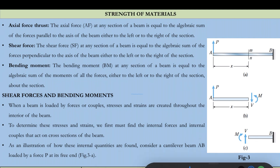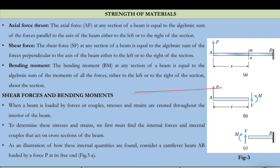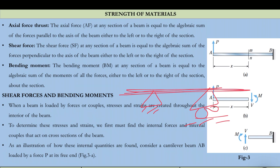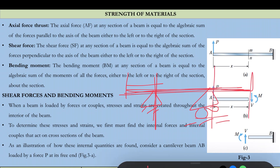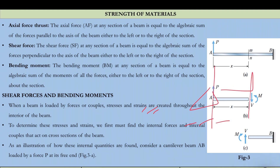An overhang beam is essentially a simply supported beam where a portion of the beam extends beyond one of the supports. The overhanging part projects past the support. In this way you can have different types of beams, which we will see when solving problems.